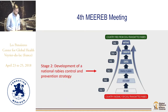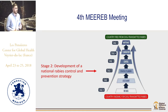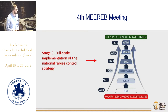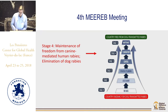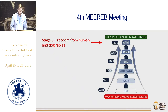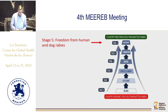Stage one is a country that has local level assessments and campaigns in place, resulting in a short-term rabies action plan. Stage two is a country that has developed and endorsed a national rabies control strategy. Stage three is a country with full-scale implementation of that strategy where success is observed — a decline in canine and human rabies cases. Stage four is the 2030 goal — zero by 30 — where there are no more canine mediated human rabies deaths.